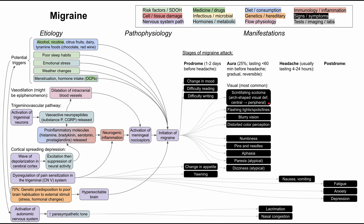Other visual aura changes include flashing lights, flashing spots, flashing lines in the visual field, general blurry vision in one or both eyes, and distorted color perception. Non-visual symptoms include numbness, paresthesias — the pins and needles sensation — and aphasia. Atypical auras like paresis and dizziness have also been reported, though these warrant further investigation to rule out another neurological problem. Lacrimation and nasal congestion at the end of the aura can lead into the headache phase.